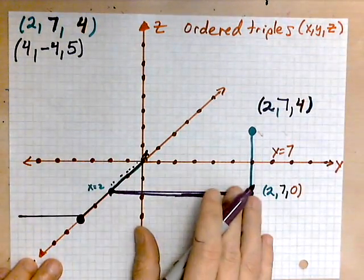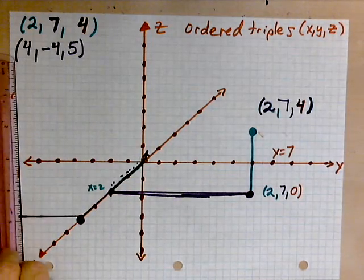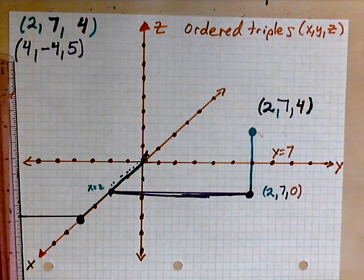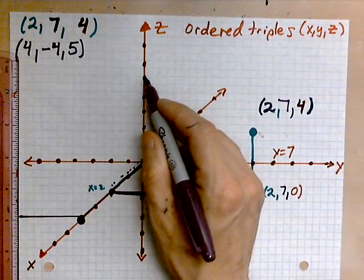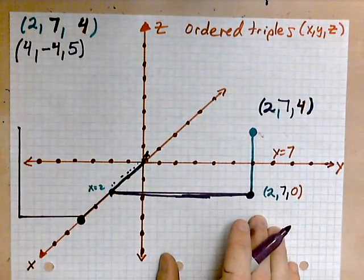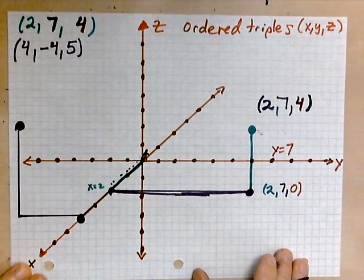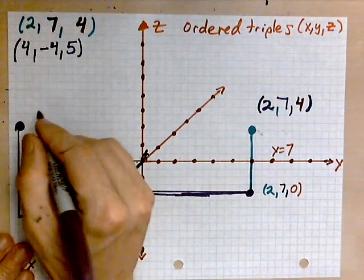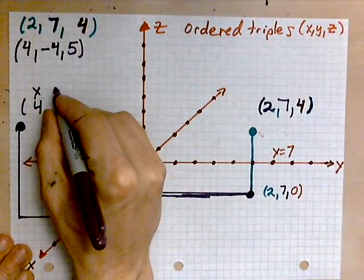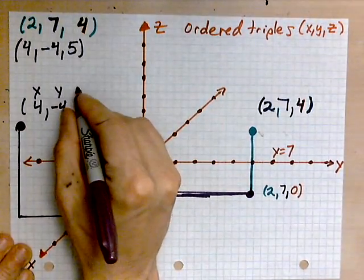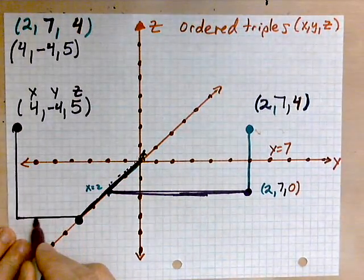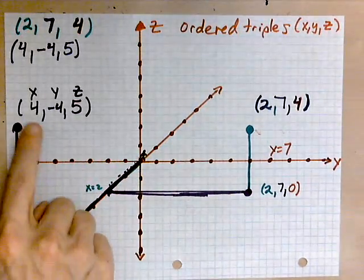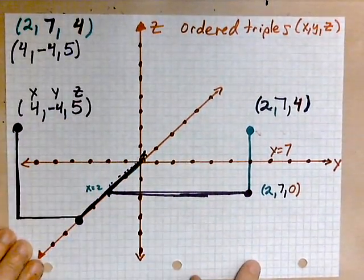Then 5 straight up — 1, 2, 3, 4, 5 — roughly like this. We can now label this point: x is 4, y is negative 4, and z is positive 5. So this way along x, then you turn straight over along negative y, then you go straight up — and it brings you to the point 4, negative 4, positive 5. These are a couple of examples of plotting points in three-dimensional space.